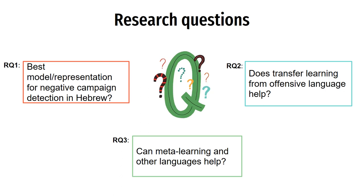We stated three research questions which we aim to answer. The first: which models and representations are the best for negative campaign detection in Hebrew? The second deals with transfer learning — whether transfer learning from the offensive language domain can help. And the third question is whether meta-learning and other languages can help.